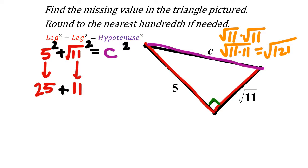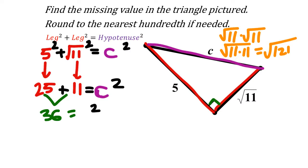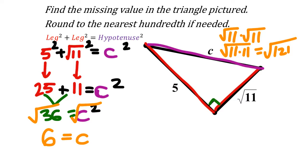So adding those together: 25 + 11 = 36, which equals C². I don't want C² — I want the side length — so I square root both sides. Using the principle of equality, if you do something to one side of an equal sign you do it to the other. This gives me just C, and the square root of 36 is a perfect square, so this side length is 6.